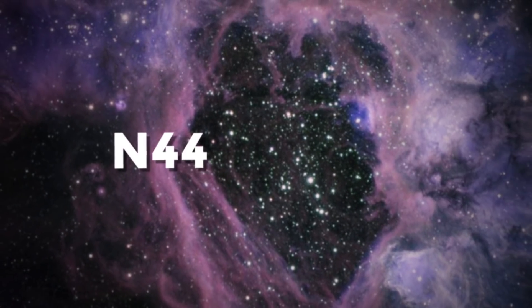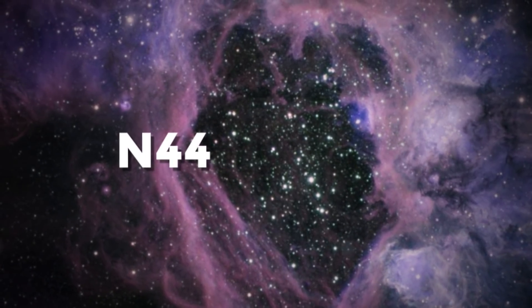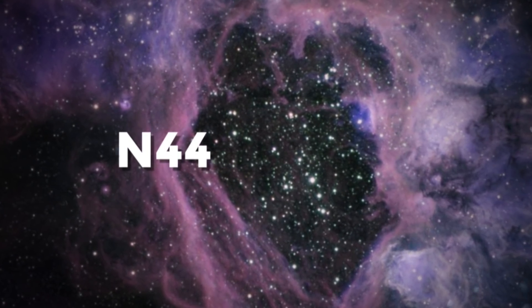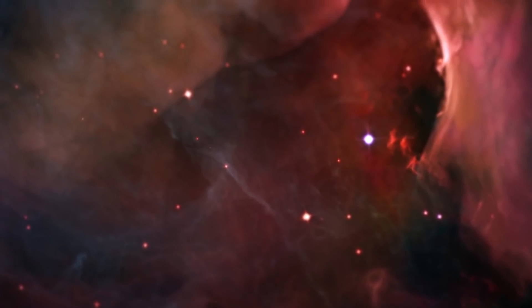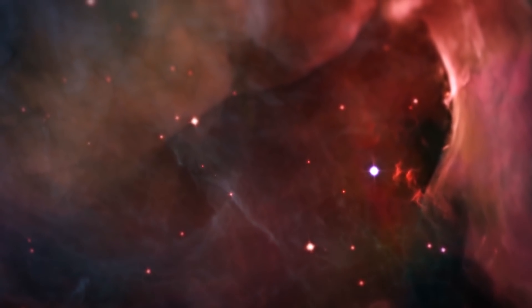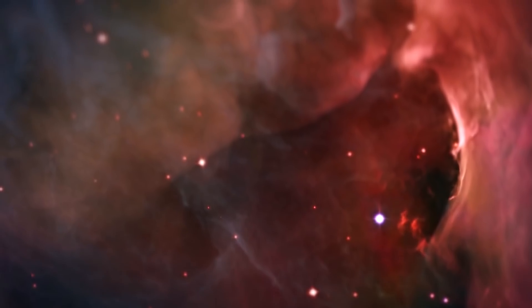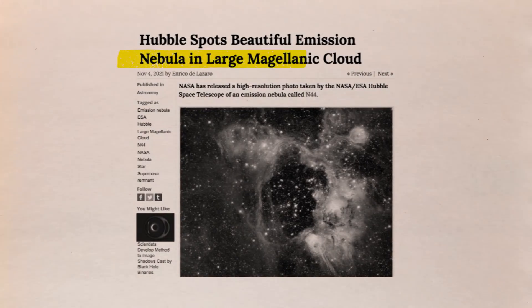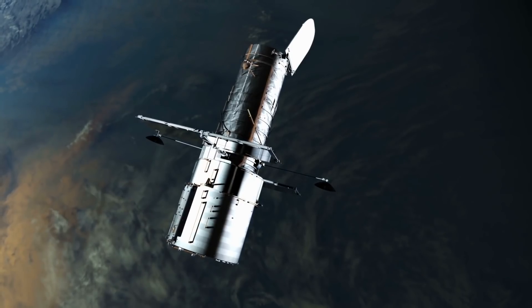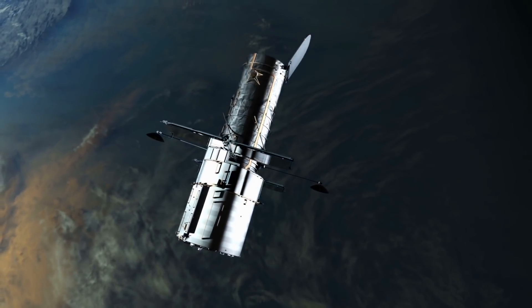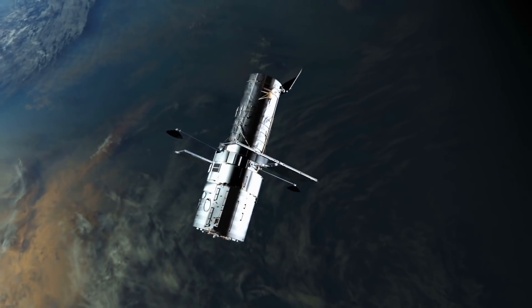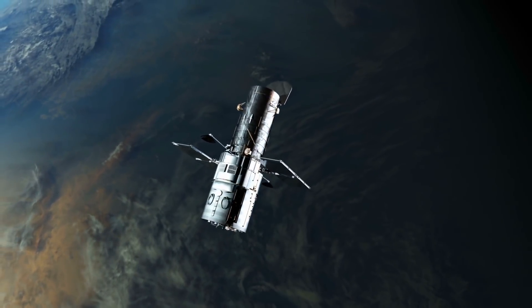A bright nebula known as N44 has caught the eye of astronomers, despite its remote location in the Large Magellanic Cloud, one of our Milky Way's satellite galaxies. N44 is a massive cloud of gas and dust that spans 1,000 light-years and has been observed by numerous telescopes over the years. The presence of the N44, according to NASA, is still a mystery. What is it about this specific space cloud that is so stunning and mysterious?